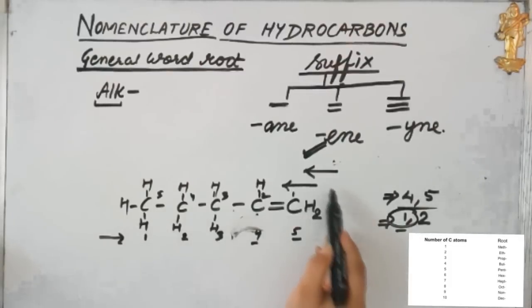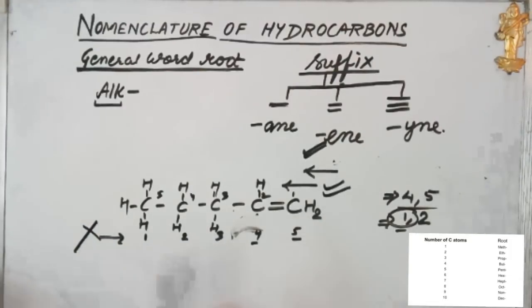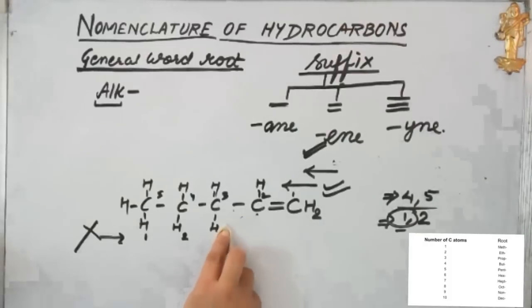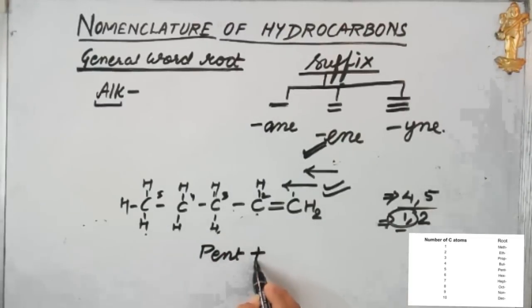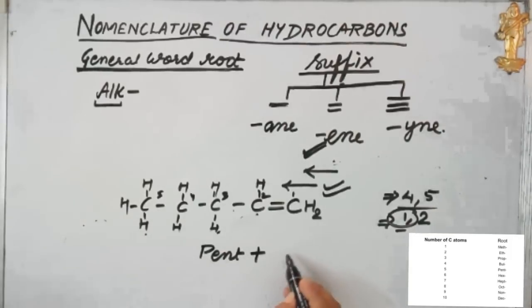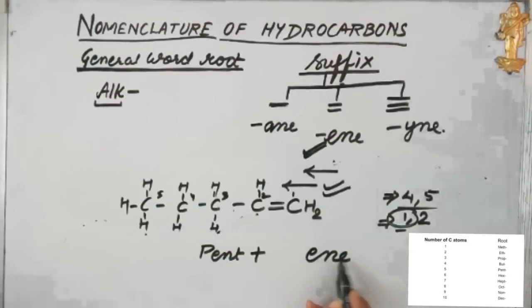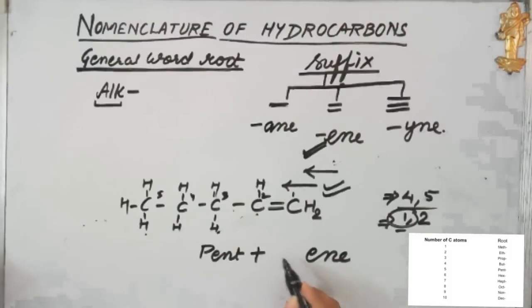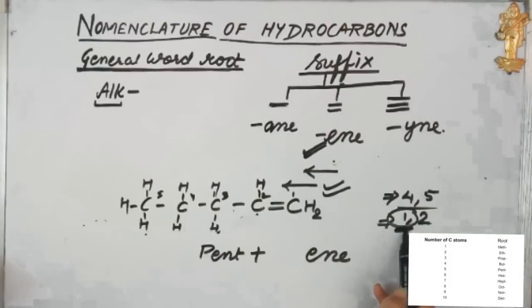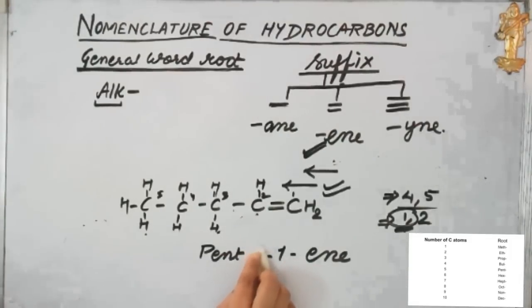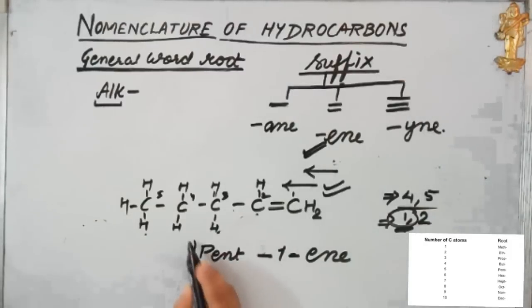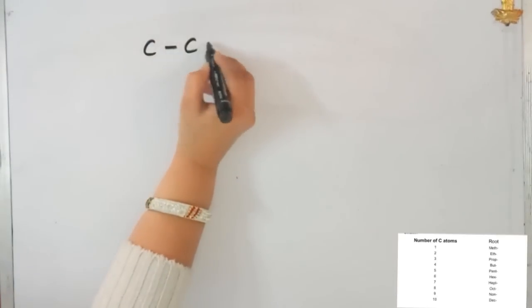Comparing four and one, the smaller number is one, so we start numbering from the right side. With five carbons, the word root is 'pent', the suffix is 'ene' for the double bond, and the location is one. So the name of this compound is pent-1-ene.